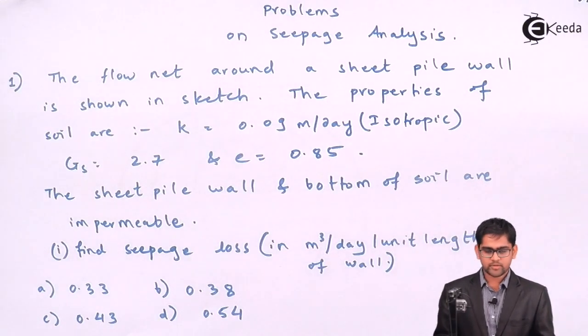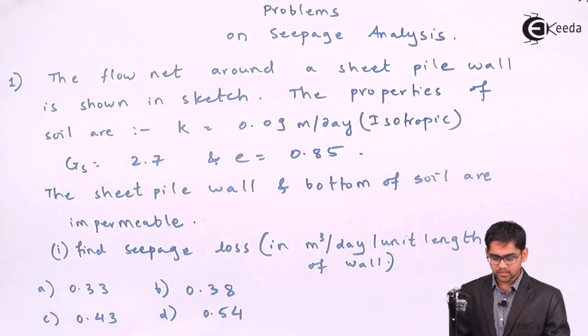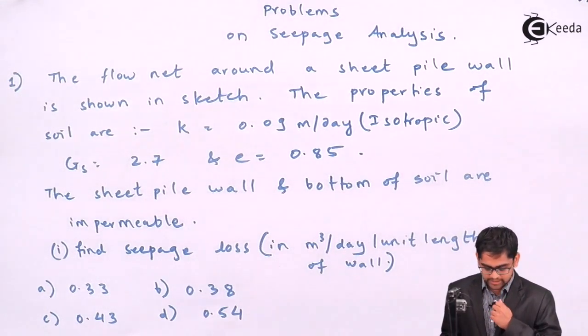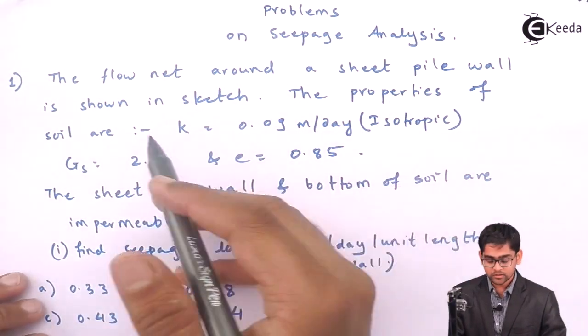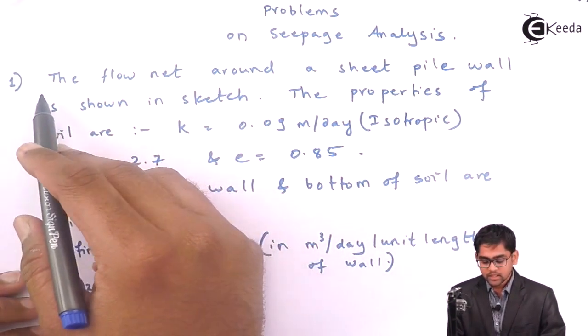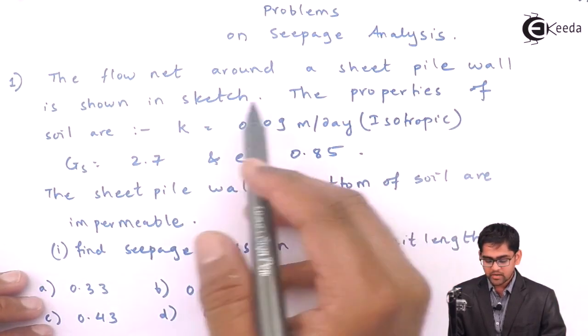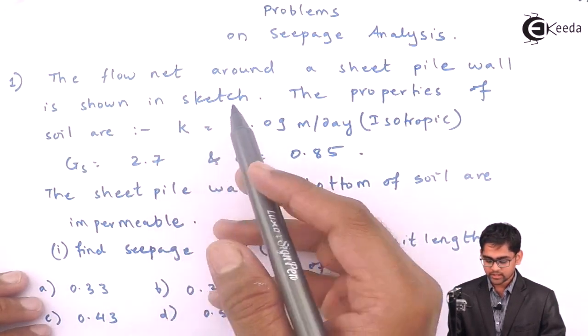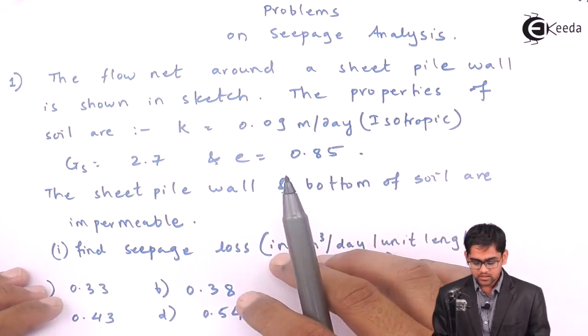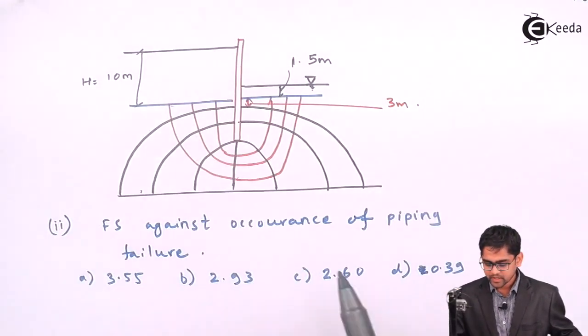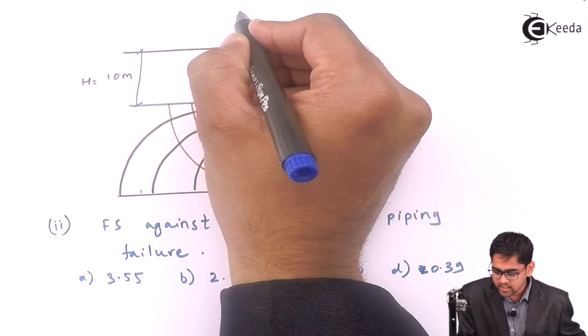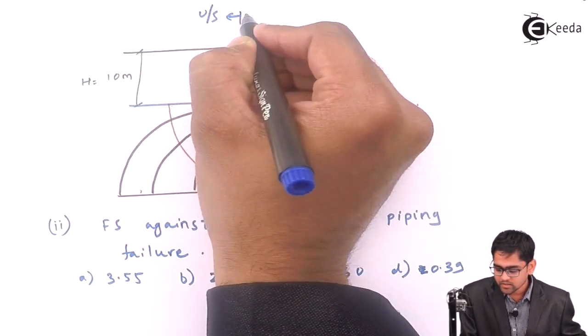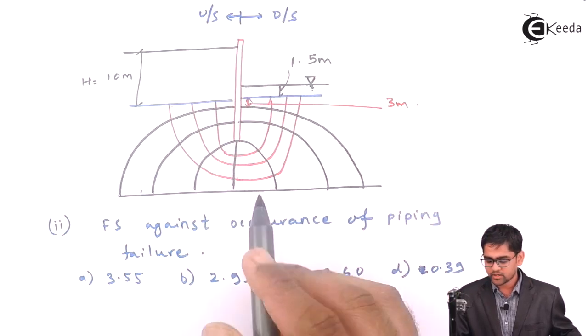We will take three problems in seepage analysis. The first problem is the lynx problem where the statement is as follows. The flow net around a sheet pile wall is shown in the sketch. The head of the water at the upstream end is 10 meter and at the downstream end it is 1.5 meter head of the water.